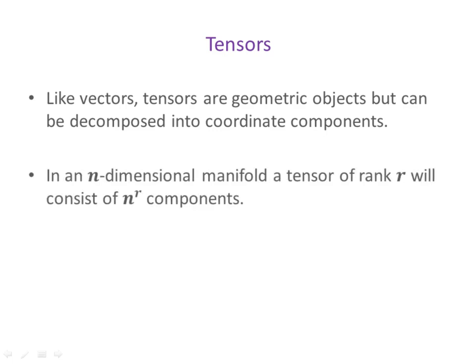However, in any n-dimensional manifold, a tensor of rank r will consist of n to the r power components. So, for example, if we're dealing with a three-dimensional Euclidean space, a scalar, which is rank zero, has three to the zero components, or just one. A vector will have three to the first power components, or three. A second-rank tensor will have nine components. A third-rank tensor will have 27 components, and so on.